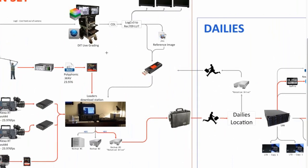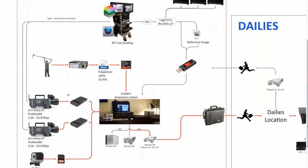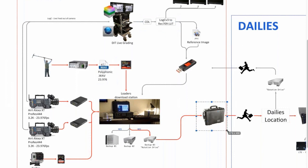It's a little bit more common on features and lower budget features where they don't have large personnel. Those are the environments where I'm making dailies on set. When I've worked on episodic, I'm usually just sending the raw camera data, the audio from the audio mixer, and the color decisions — the DP's LUTs or CDLs — sending all those off to a more traditional dailies house. I've done some HBO shows with this type of workflow, and the heavy lifting is done at a separate facility. But in the commercial world, where I typically work, I'm handling that myself.